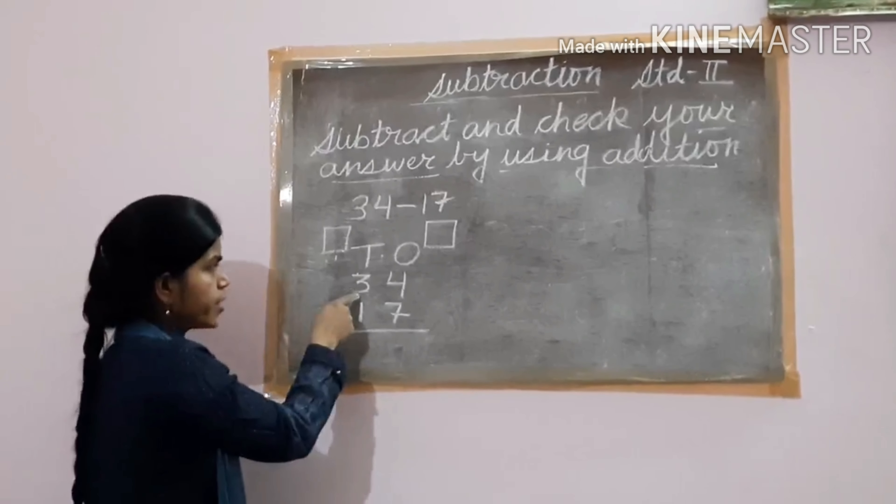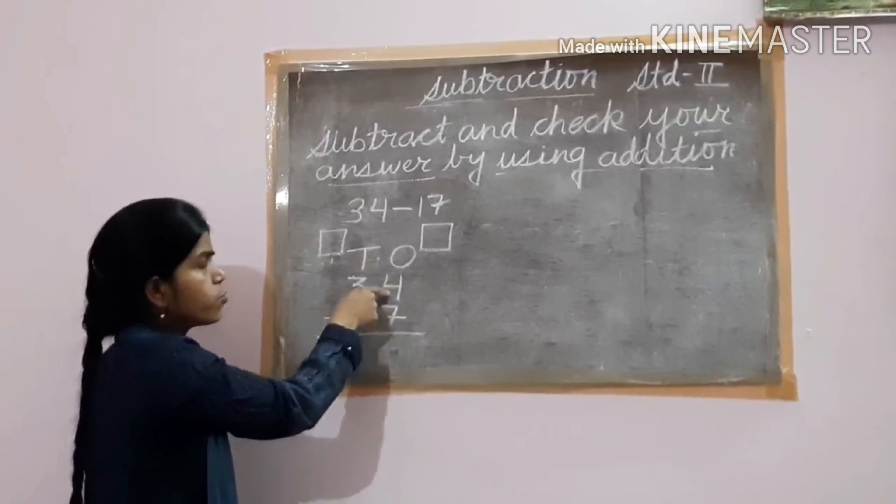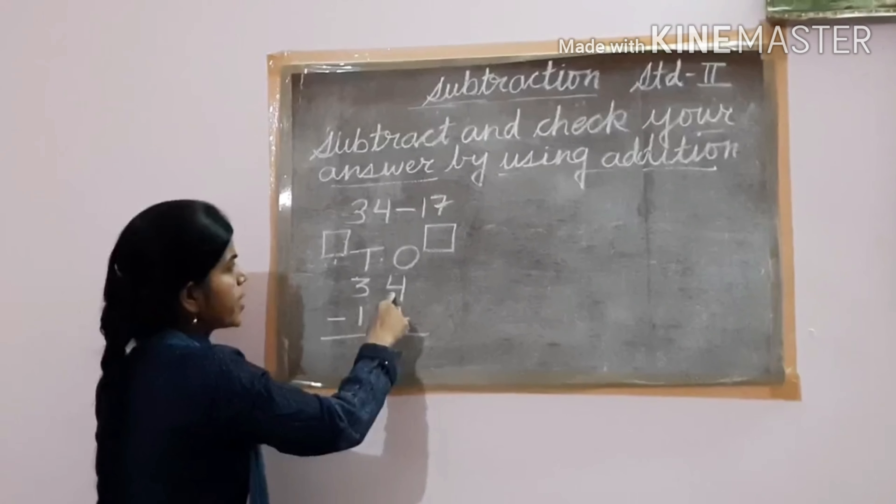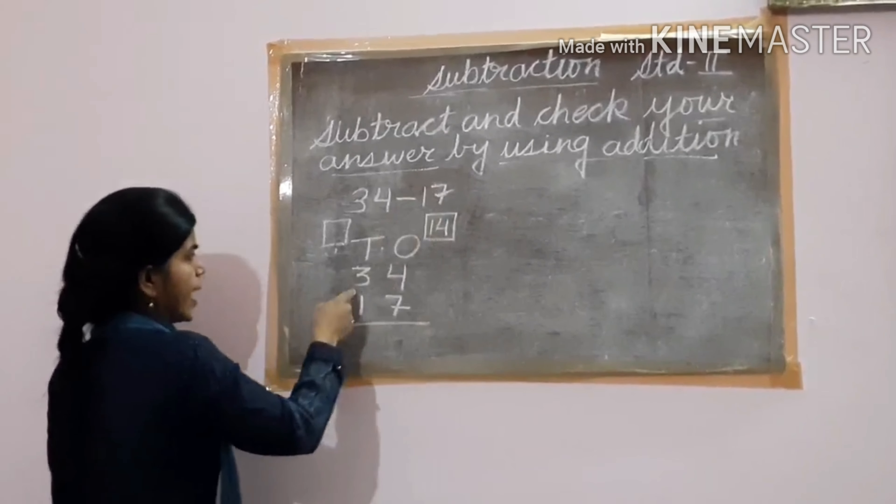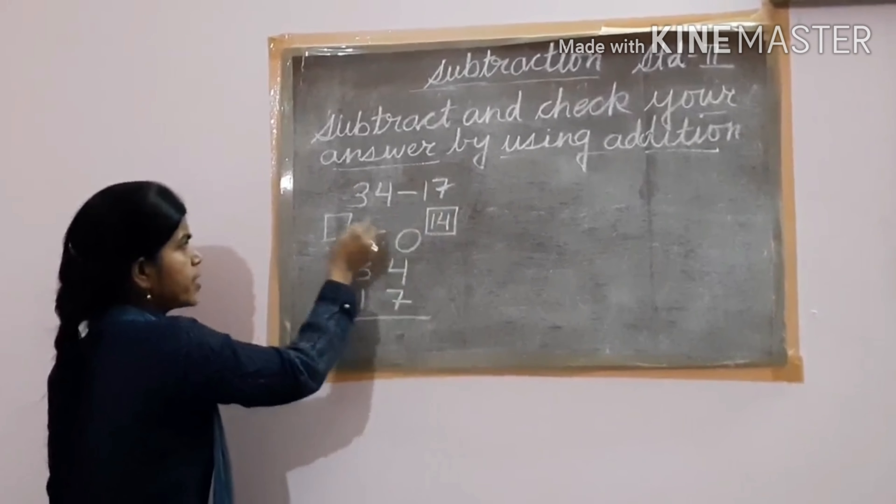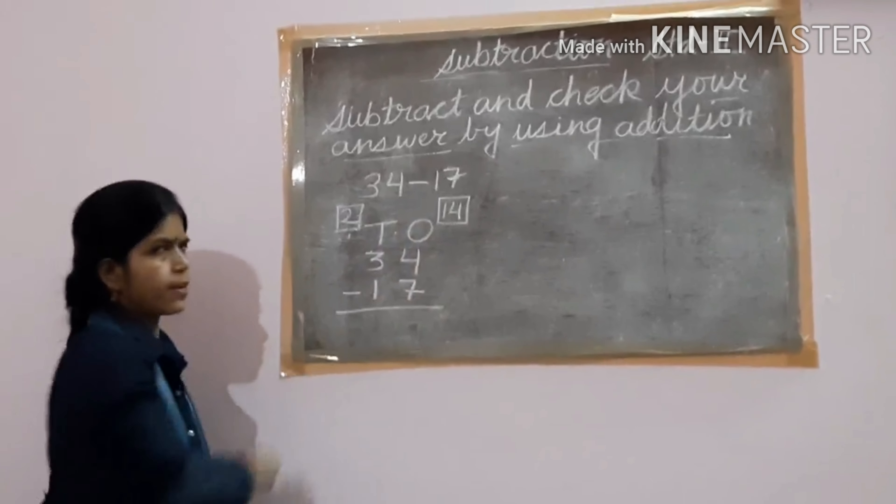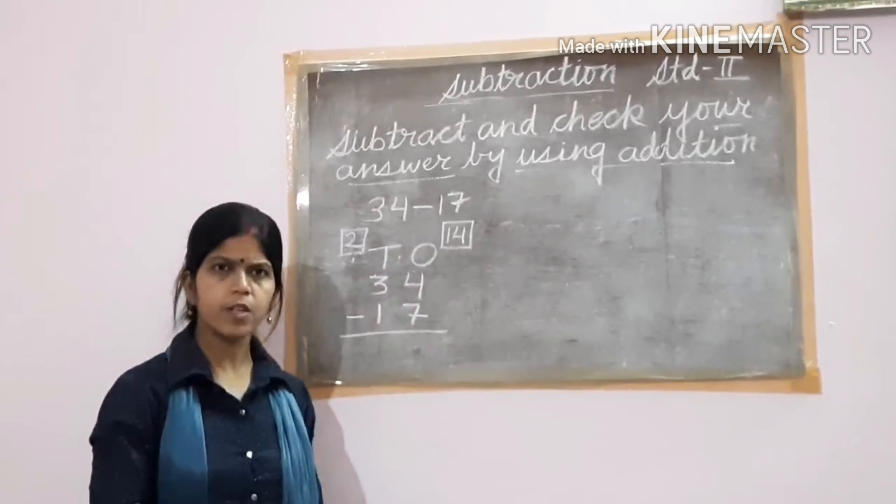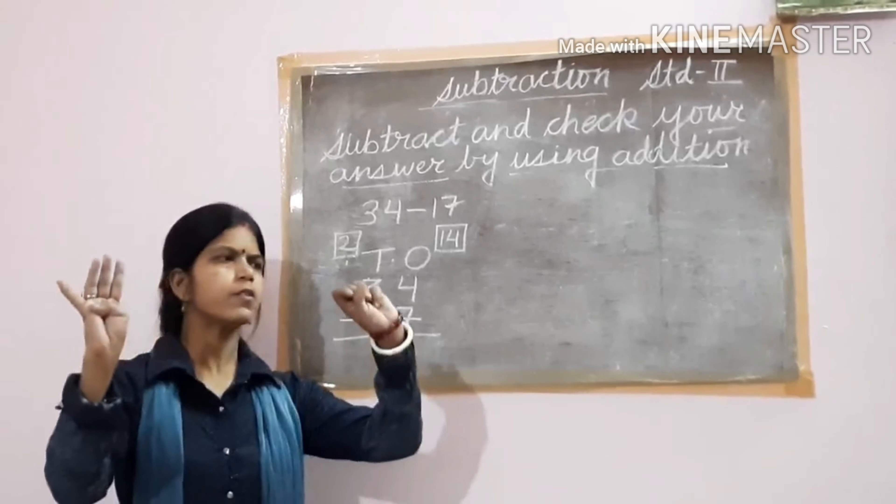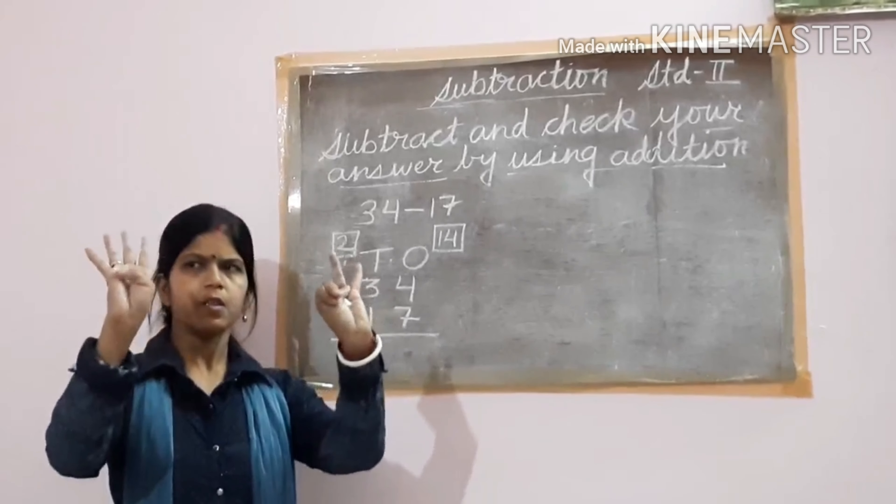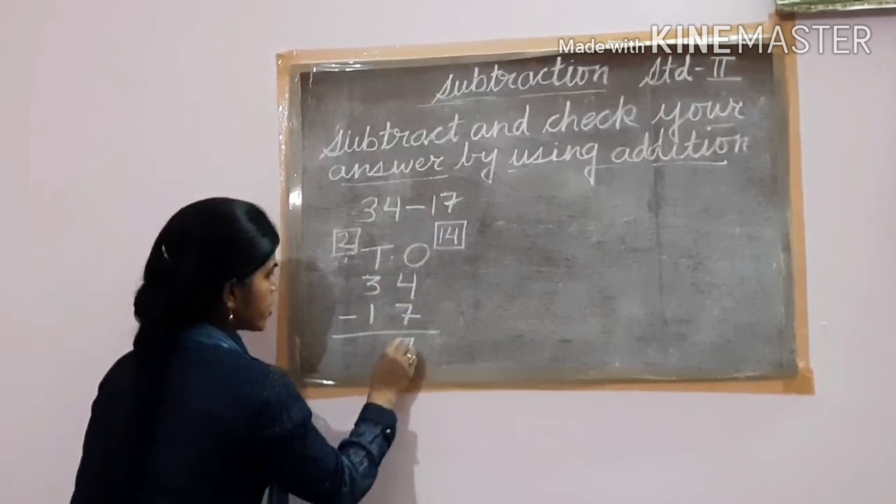So what we have to do? Regrouping. Now here is 3 tens. Given 1 ten to the ones, then here is 10 plus 4 ones, that is 14 ones. And here, 3 tens minus 1 ten given, then here is only 2 tens. 14 minus 7: count after 7 till 14: 8, 9, 10, 11, 12, 13, and 14. That is 7.